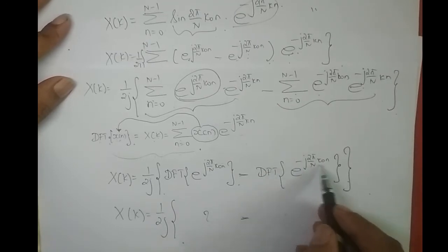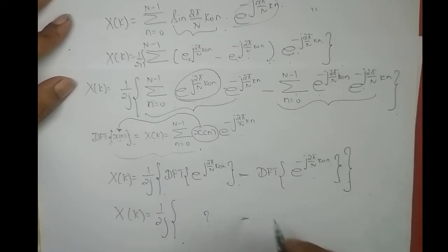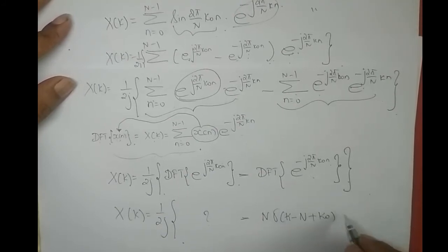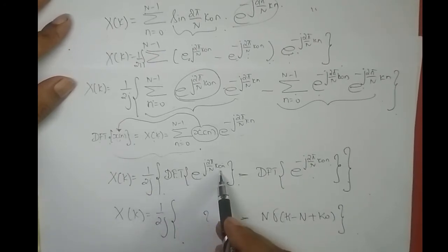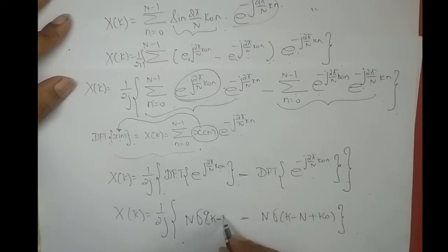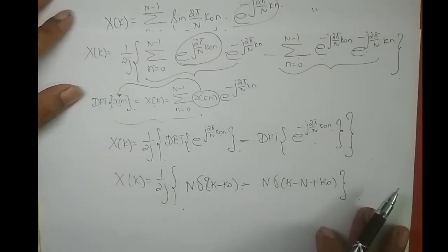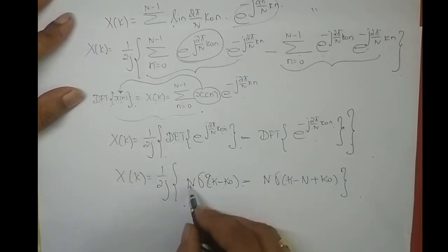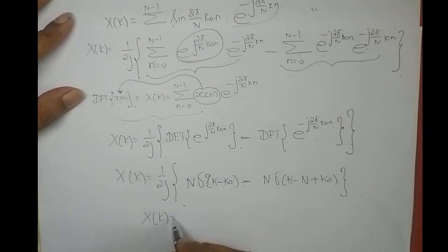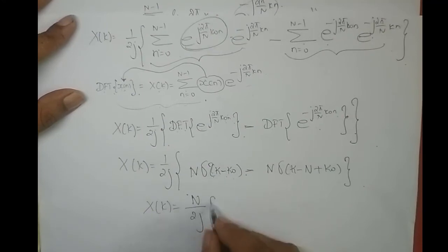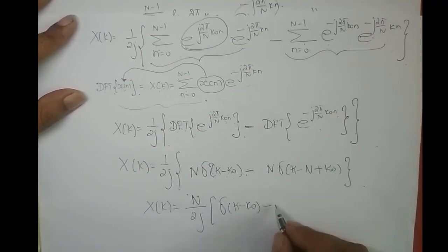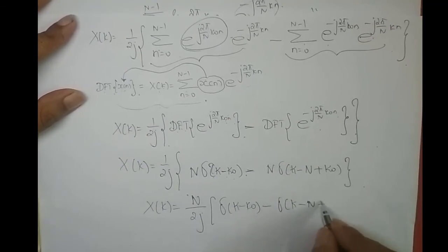What is DFT of e^(−j2π/N · k₀n)? It is N · δ(k − (N − k₀)). And DFT of e^(j2π/N · k₀n) is N · δ(k − k₀). Taking N out, X(k) = N/(2j) · [δ(k − k₀) − δ(k − (N − k₀))].